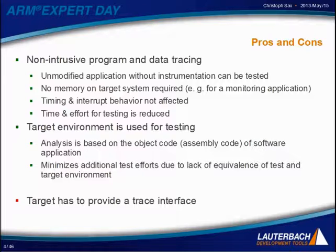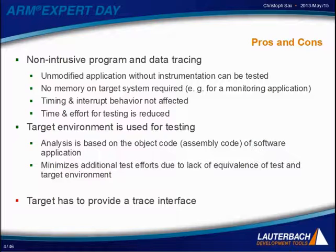Another advantage of this approach is that the target environment is the test environment. Trace32 uses a code coverage approach that is based on the object code, which is equal to the assembly code. This means that there is no need to undergo additional verification efforts, because normally you would have to prove that your results received in your testing environment are identical to your target environment. With the Trace-based approach, the testing environment is equal to the target environment, so this issue is basically non-existent.